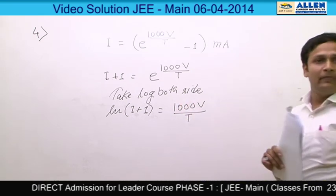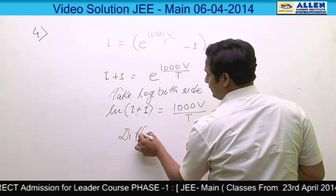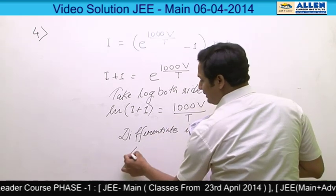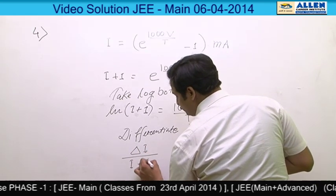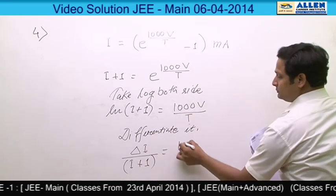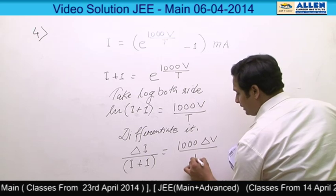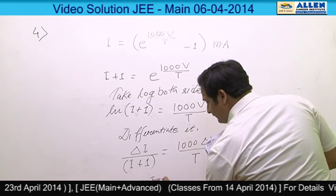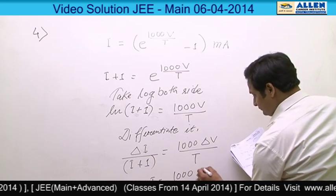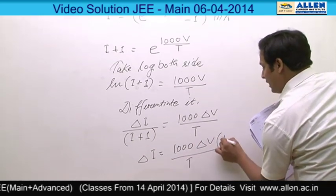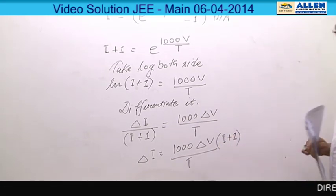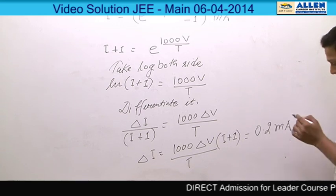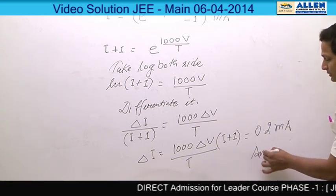Take log of both sides: ln(I + 1) = 1000V divided by T. Now differentiate: delta I divided by (I + 1) equals 1000 times delta V divided by T, since T is constant (temperature is given and constant). From this we get delta I = 1000·delta V·(I + 1) divided by T. After putting in the values of delta V, I, and T, we get the answer 0.2 milliampere. Hence the answer to this question is option 3.